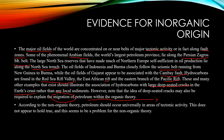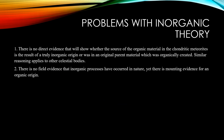According to the non-organic theory, petroleum should occur universally in areas of tectonic activity, but this does not appear to hold — and this seems to be a problem for the non-organic theory. The problems with the inorganic theory include: first, there is no direct evidence showing whether organic material in chondritic meteoroids results from a truly inorganic origin or from originally organic parent material. Second, there is no field evidence that inorganic processes have occurred in nature, while there is mounting evidence for an organic origin.